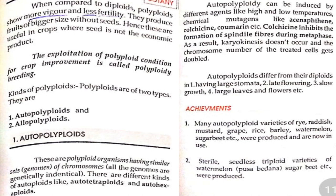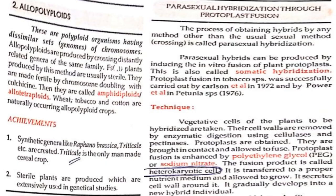Achievements: many autopolyploid varieties of rye, radish, mustard, grapes, rice, barley, watermelon, and sugar beets, etc., were produced and are now in use. Sterile seedless triploid varieties of watermelon and sugar beets were also produced.